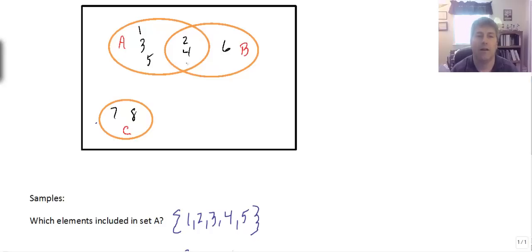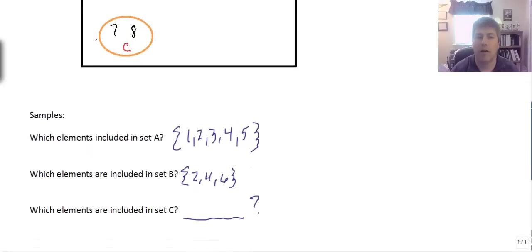We can see here that two and four are included in both sets. They're in set A and set B. So intersection is what's common to both.